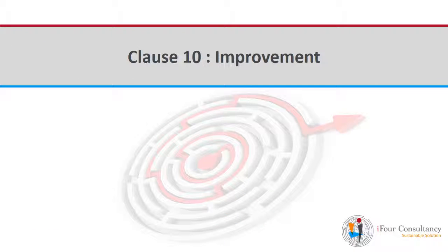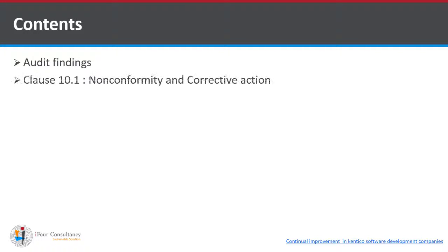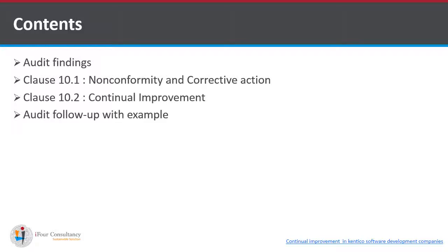Hi all, this is Khushbu, an intern at i4 Consultancy Services. Hope you are enjoying the ISO 27001:2013 series. As you know, there are seven management clauses in ISO 27001:2013. We have already covered six clauses and now I am going to cover the last clause — Clause 10: Improvement. In this presentation, I will cover audit findings, Clause 10.1 non-conformity and corrective action, Clause 10.2 continual improvement, audit follow-up with an example, and references.